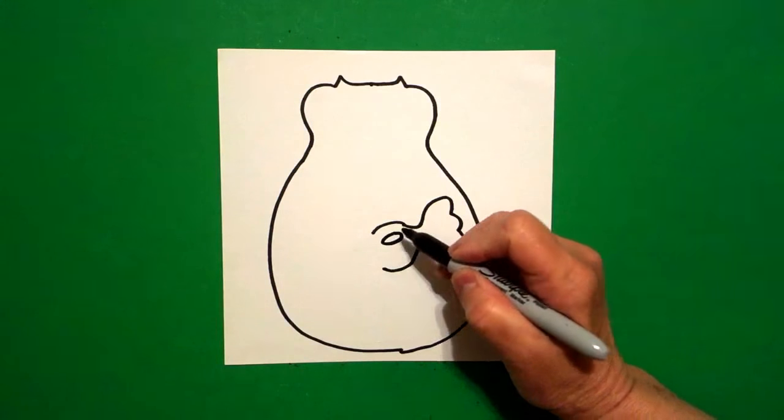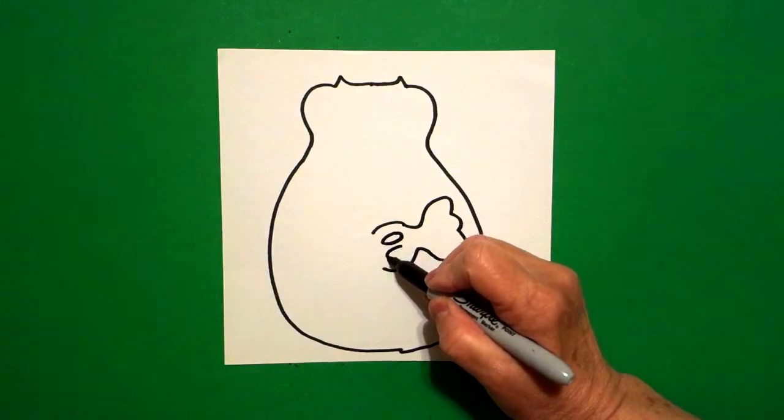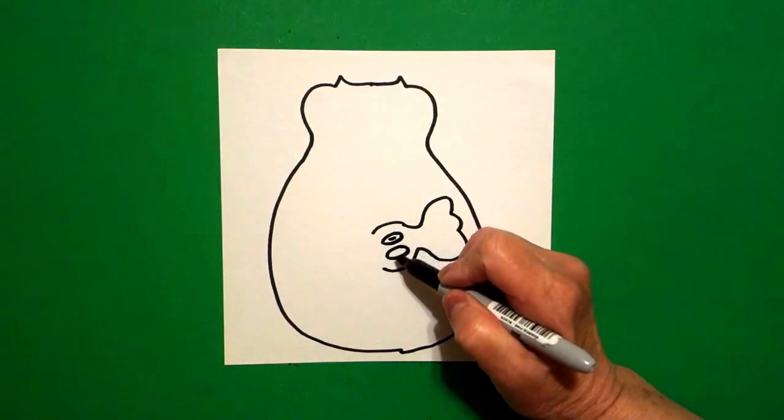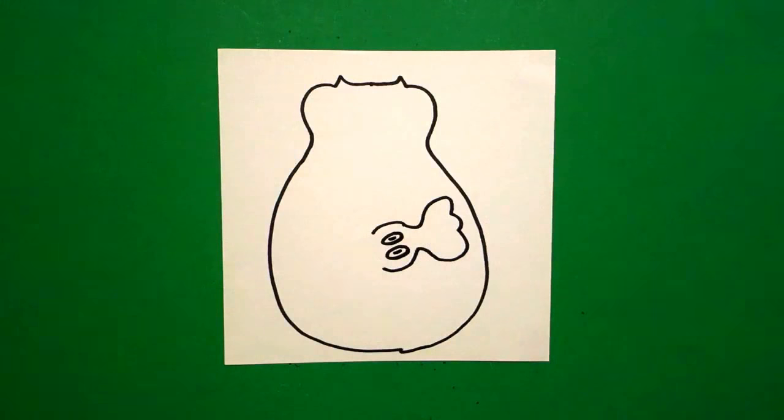Right here, I'm going to draw one flat oval, and then I draw another flat oval, and in the center, I draw two straight lines.